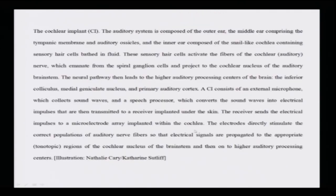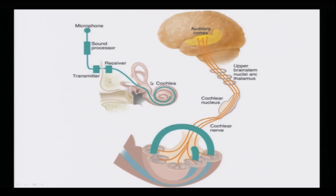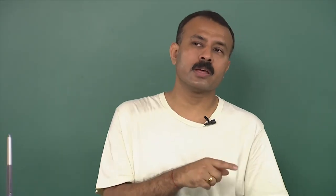After the receiver implant, the receiver sends the electrical impulses to the micro-electrode array (MEA) implanted within the cochlea. This is where MEA finds its application — why MEA has to be studied in order to understand how the cell-electrode interfacing is such a very important criterion before all these kinds of implants can be successful.